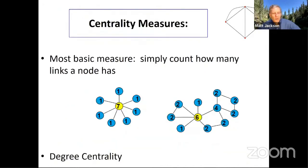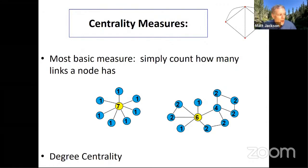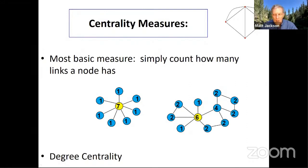Let me talk about how we measure who's central in a network. The most obvious way is just to count how many people you're linked to — how many friends do you have? If you look on Twitter, how many followers do you have? Do you look like Katy Perry with tens of millions of followers, or are you somebody who has three followers? If you've got more followers, you can blast information out and more people will hear about it. That's what's known as degree centrality — degree just means how many people you're connected to.